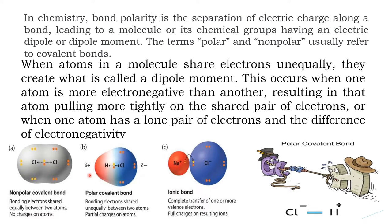Take the example of the chlorine molecule, Cl₂. The electronegativity of the two chlorine atoms is the same, so the shared pair of electrons is placed equally between the two chlorine atoms. As a result, the chlorine molecule is a nonpolar covalent compound — it does not have polarity.